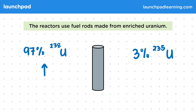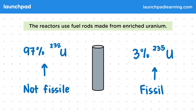The uranium-238 is not fissile, meaning we can't easily make it undergo fission by having it absorb a neutron. On the other hand, uranium-235 is very fissile and is easy to break up with fission. You might be surprised at how few of the atoms in the rod will actually undergo fission, but this makes the rate of fission much more manageable.